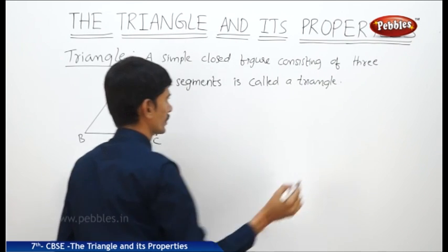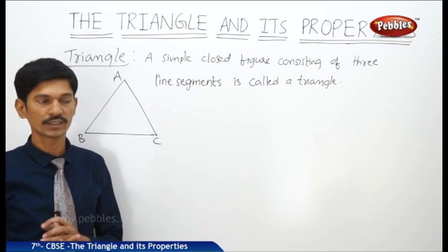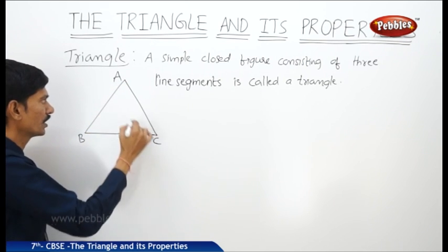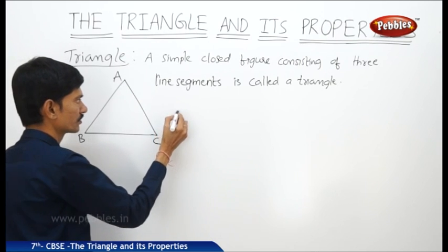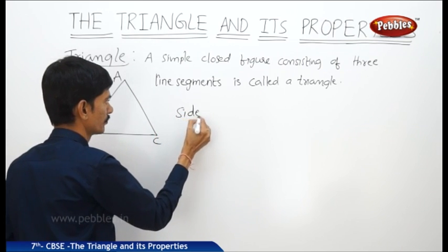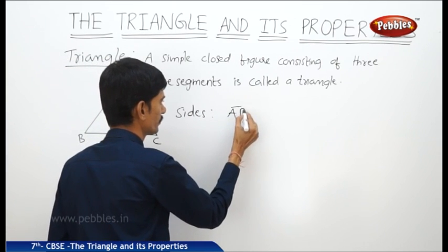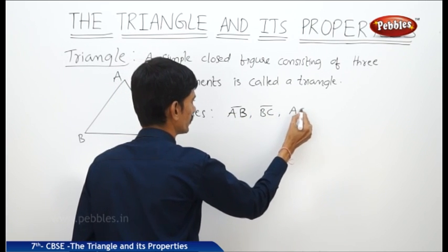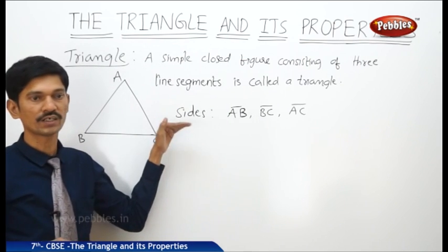What are the three line segments called in the case of a triangle? The three line segments AB, BC, and AC are called sides. So the sides are denoted by the line segments AB, BC, and AC. The three line segments are called the sides of the triangle.